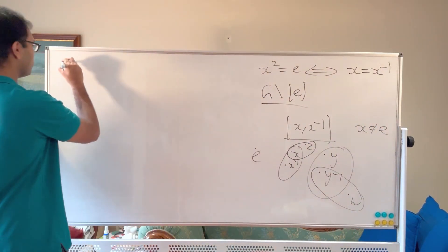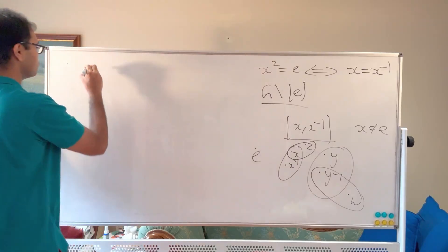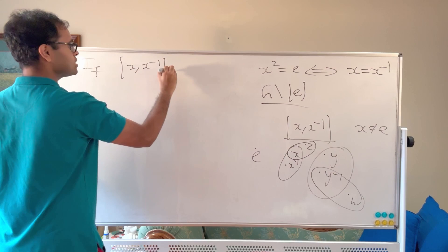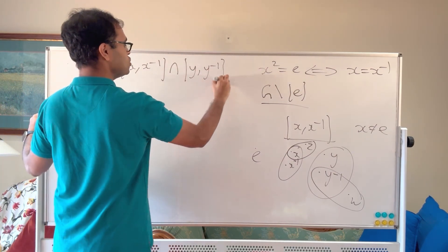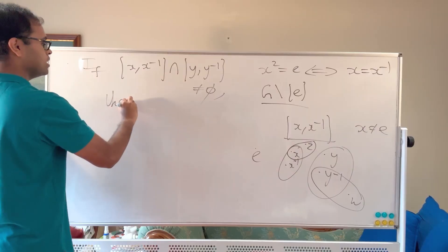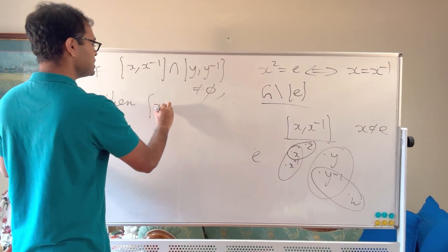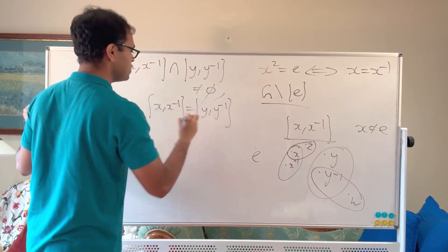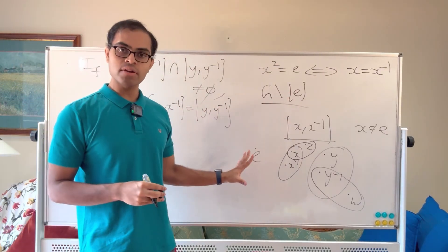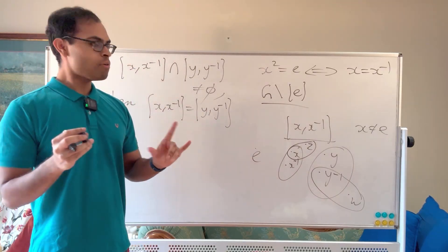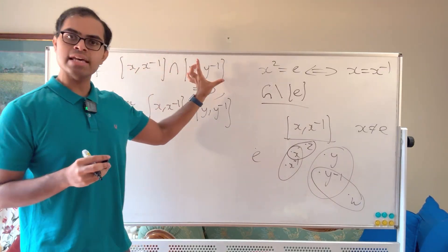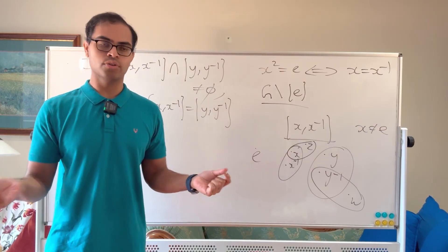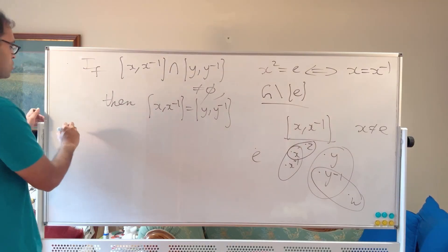So what we're going to show is the following: if the intersection of {x, x⁻¹} and {y, y⁻¹} is non-empty, then the two sets are equal — that is, {x, x⁻¹} = {y, y⁻¹}. This is the formal statement. Basically, we're saying these two-element sets are either disjoint or equal to each other, and in that way they partition the non-identity elements of the group.